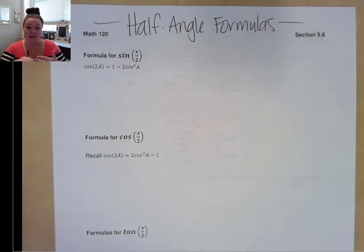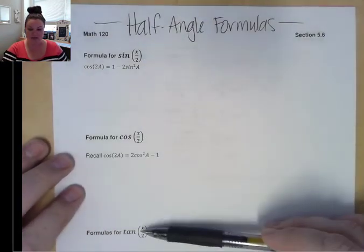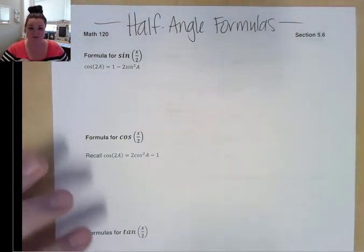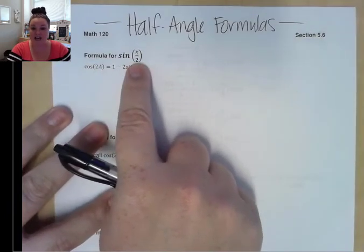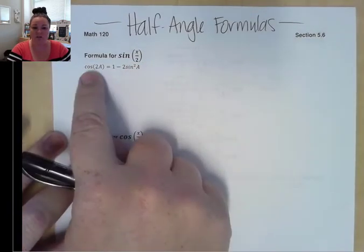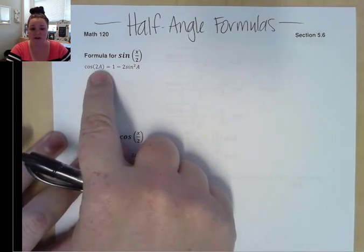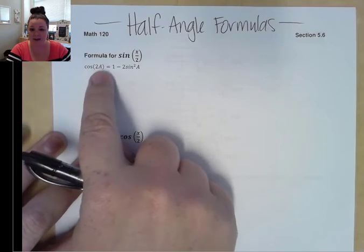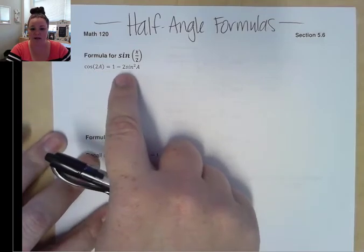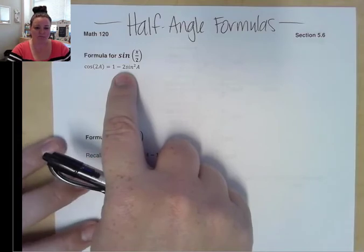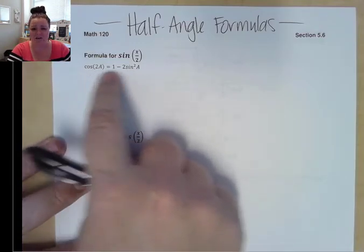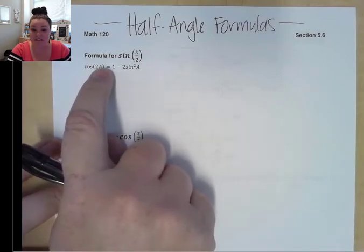I'm going to go through the process of deriving the three half angle formulas — sine, cosine, and tangent. You can see it's an angle divided by 2, which is why we call it a half angle formula. First, we want to come up with a formula for sine of x over 2. We'll start with this double angle formula from section 5.5: cosine of 2a equals 1 minus 2 sine squared a. I'm going to let a equal x over 2.